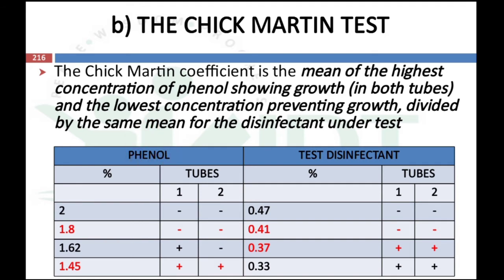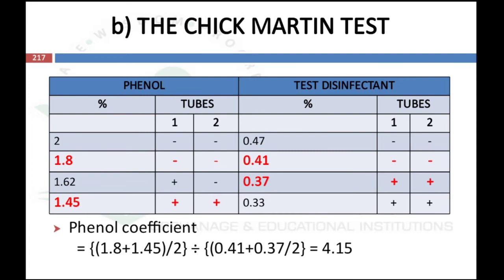Now divided by the ratio of the test disinfectant showing the same result. There are two concentrations of test disinfectant preventing growth: 0.47 and 0.41. We select the lowest concentration inhibiting growth, which is 0.41. The highest concentration showing growth is 0.37, since 0.37 is the highest concentration showing growth of microorganism.